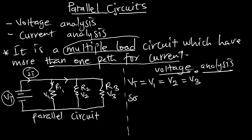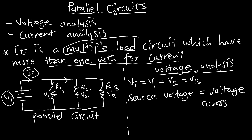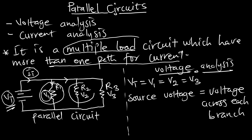The source voltage — that is, the voltage from the battery — is equal to the voltage across each branch. Looking at the diagram, voltage Vt is the same as V1 across the first branch. When you measure the voltage across the second branch, Vt equals V2, and the same for V3. In parallel circuits, we have the same voltage across every element.